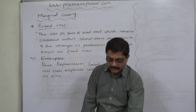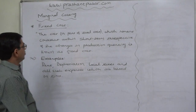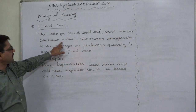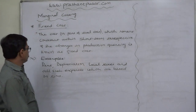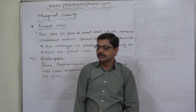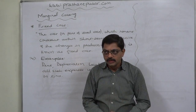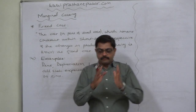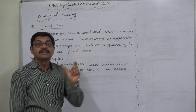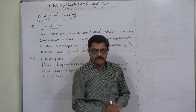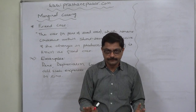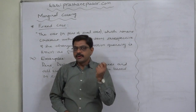Hello friends, welcome. Let us take the concept of fixed cost. The cost or part of total cost which remains constant within the short term, irrespective of the changes in production quantity, is known as fixed cost. In marginal costing, we have to segregate the total cost into two parts: variable cost and fixed cost. The part of total cost that is fixed remains constant irrespective of changes in production quantity, whether we increase or decrease production.